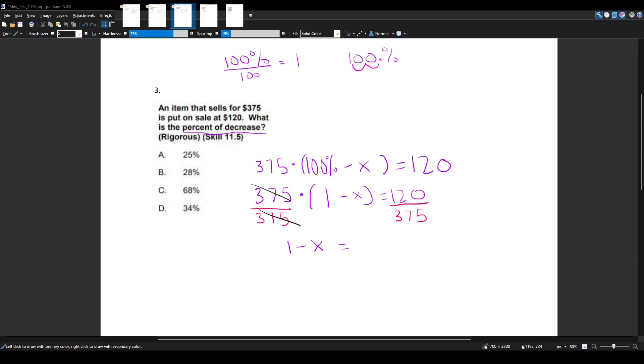120 divided by 375 gives me 0.32. Next, I'm going to subtract 1 from both sides because I want to get rid of this positive 1. Subtract 1 here, subtract 1 here. Positive 1 will cancel with negative 1. And we're left with negative X equals 0.32 minus 1.